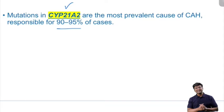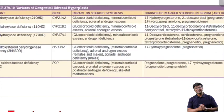Due to mutation of CYP21A2, the enzyme which is deficient is 21-alpha hydroxylase. This results in glucocorticoid deficiency, mineralocorticoid deficiency, and adrenal androgen excess.